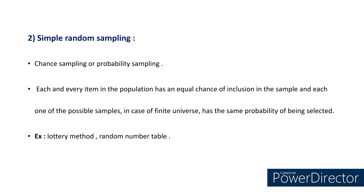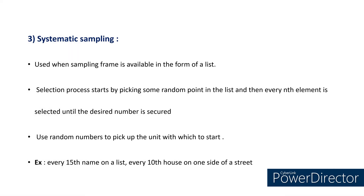Simple random sampling is most commonly used, also known as chance sampling or probability sampling. Each and every item in the population has an equal chance of inclusion in the sample and each one of the possible samples has the same probability of being selected. Examples are the lottery method and random number table. Systematic sampling is used when a sampling frame is available in the form of a list. The selection process starts by picking some random point in the list and then every nth element is selected until the desired number is secured. For example, every 15th name on a list, or every 10th house on one side of a street.